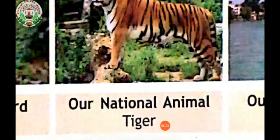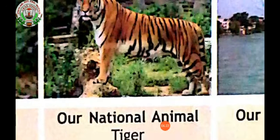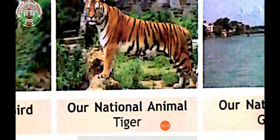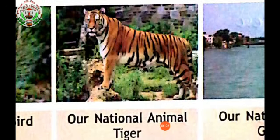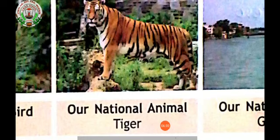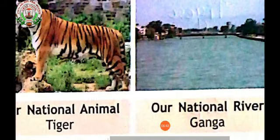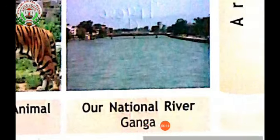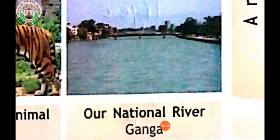Now come to the next picture. What is this, children? Any guesses — which animal is this? This is a tiger. Which is our national animal? Tiger is our national animal. Now come to the next picture — what is this, children? This is river Ganga. Ganga is our national river.